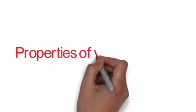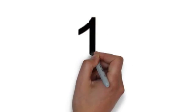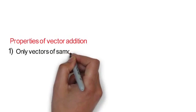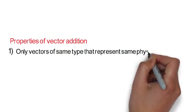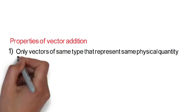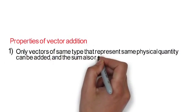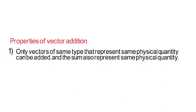Properties of vector addition. First of all, only vectors of the same type that represent the same physical quantity can be added, and the sum also represents the same physical quantity.